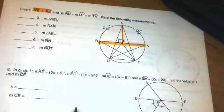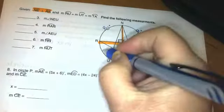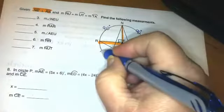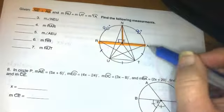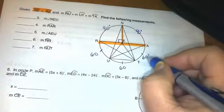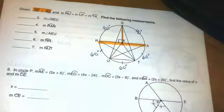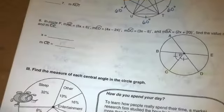Now they told us that arc RU, arc UT, and arc TA, those are all equal in measure. So I can put little marks on there. But I know that from R to A is a semicircle, so 180 divided by 3, each of those arcs must be 60 degrees. And from there you can answer the rest of the questions.